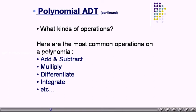Like integers or complex numbers, on polynomials also we can do many operations in mathematics, such as adding two polynomials, subtracting a polynomial from another polynomial, multiplying a polynomial, integrating, dividing, multiplying a polynomial with a scalar. So many operations are really discussed and employed in mathematics. We wanted an abstract data type to be designed which helps us carry out the same operations on this programmable quantity, that is abstract data type also.